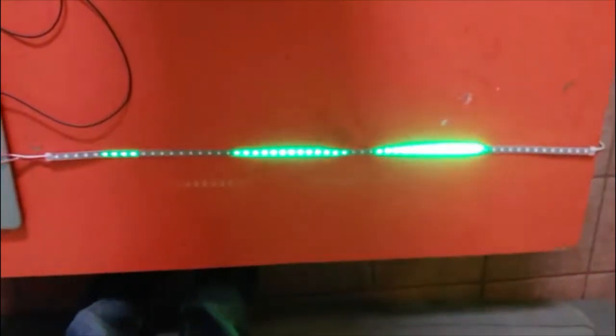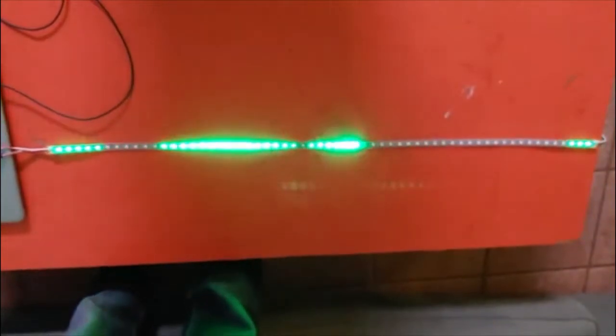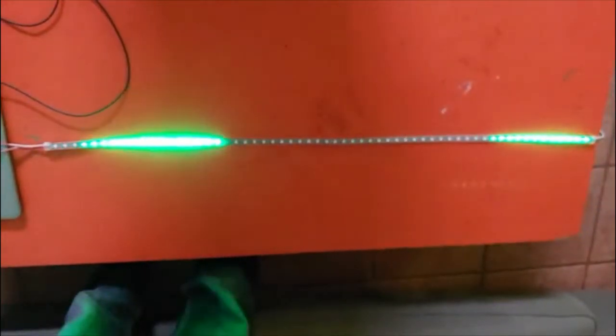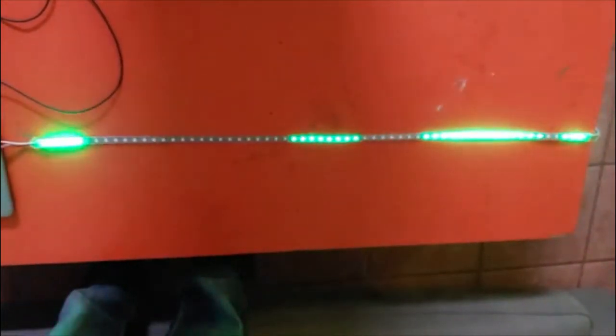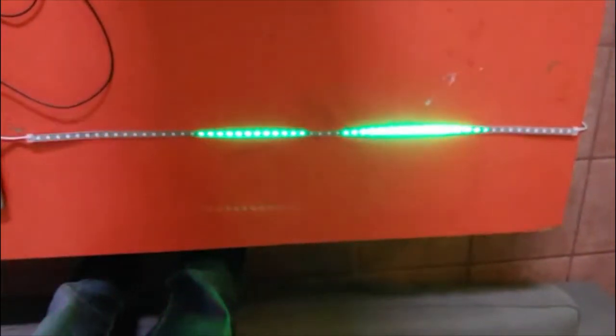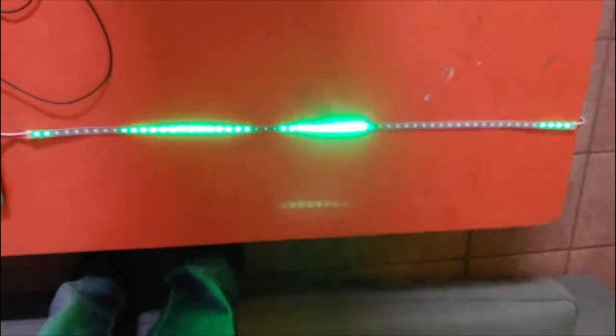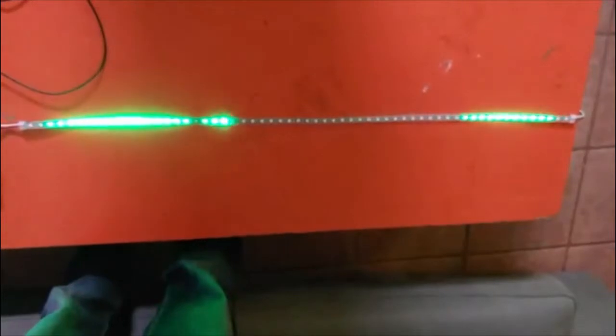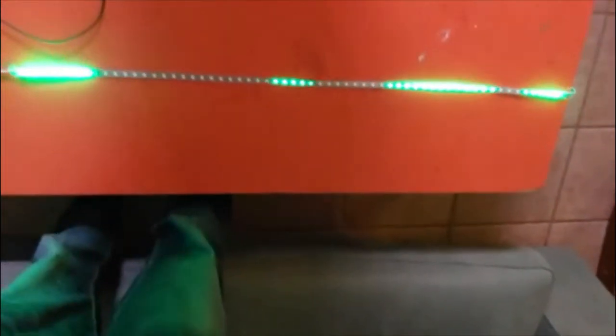So the way that this code works is that it has three waves, one of red, one of green, and one of blue, and we can change the intensity and the angle or the beats per second, another way of saying, of the waves.